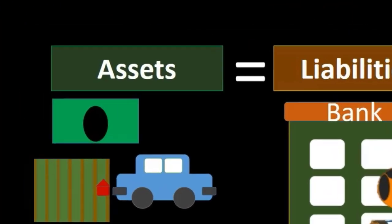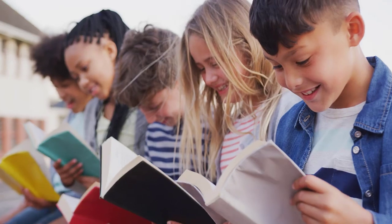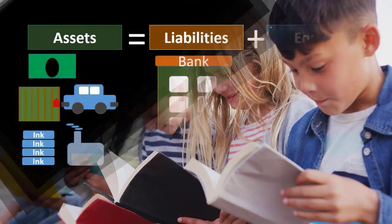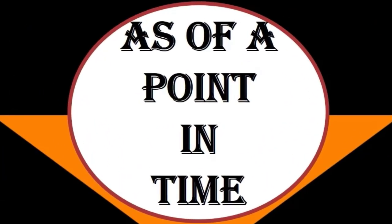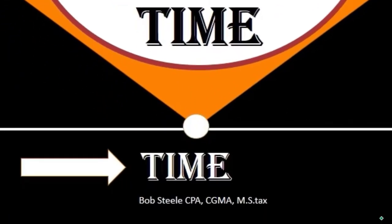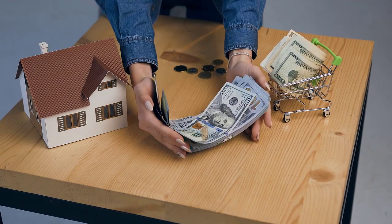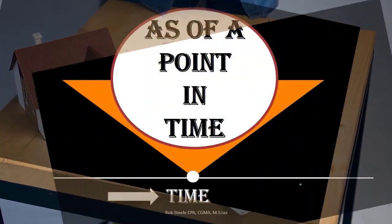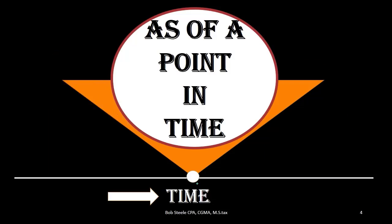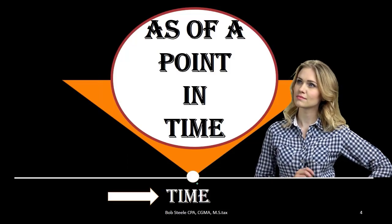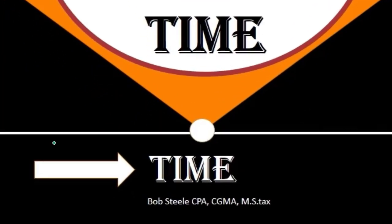All three of those equity formats represent essentially the same thing: the ownership or book value of the organization, meaning assets minus liabilities. It's important to remember that the balance sheet is as of a point in time. This is different from the income statement, which is reported as of a time frame — meaning the balance sheet needs only one date, while the income statement needs a beginning and an ending date.